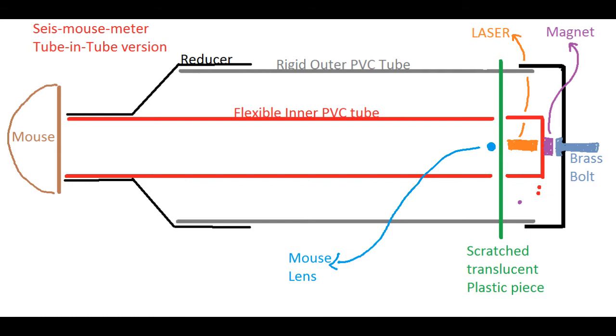Now you may be wondering how this actually records movements. The laser pointer as well as the mouse lens are rigidly attached to the red colored tube, whereas the green colored piece of translucent plastic is held rigidly. So when there are vibrations the red tube vibrates whereas the green remains fixed, and so the image on the mouse vibrates along with the vibrations around the device.